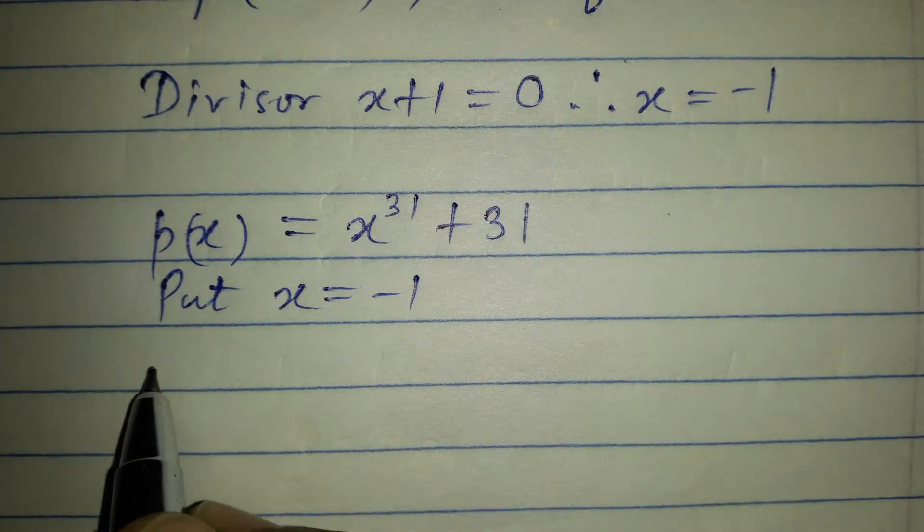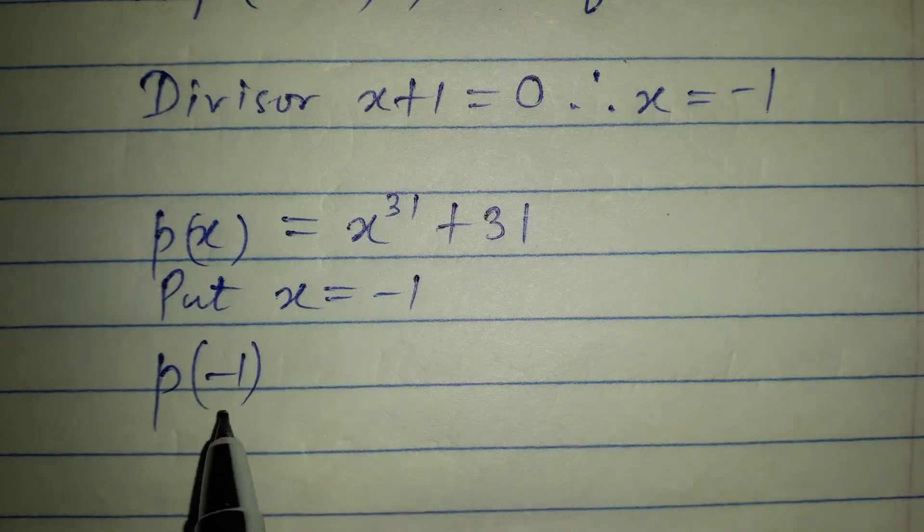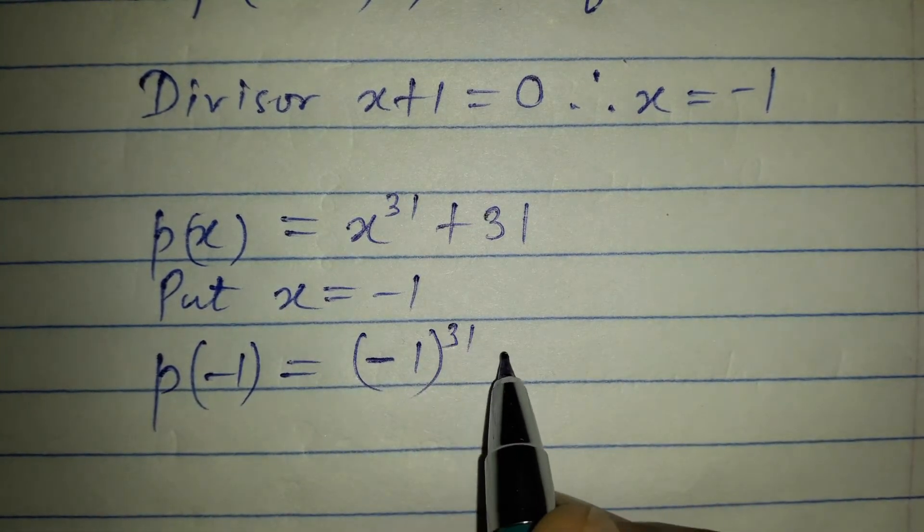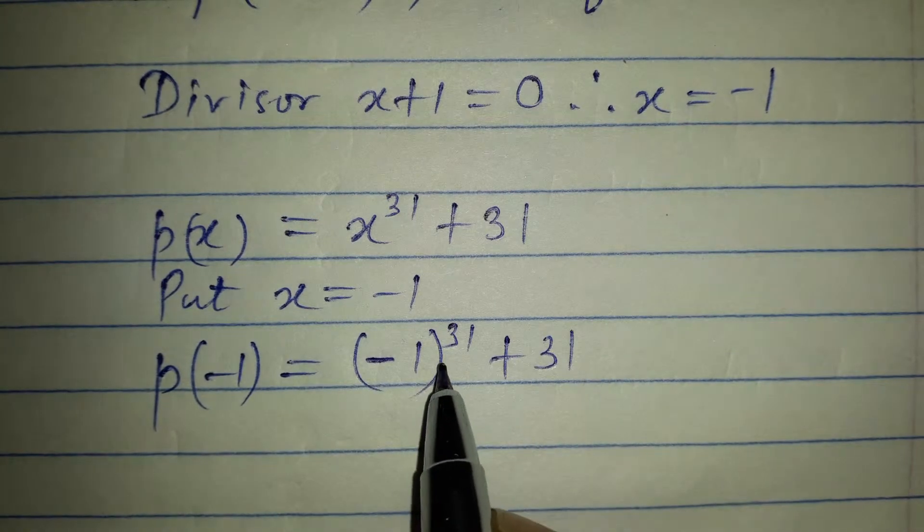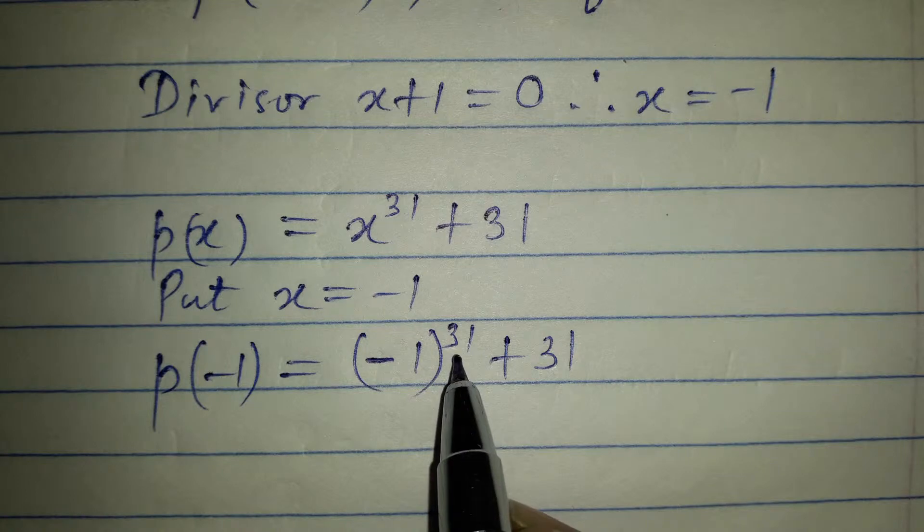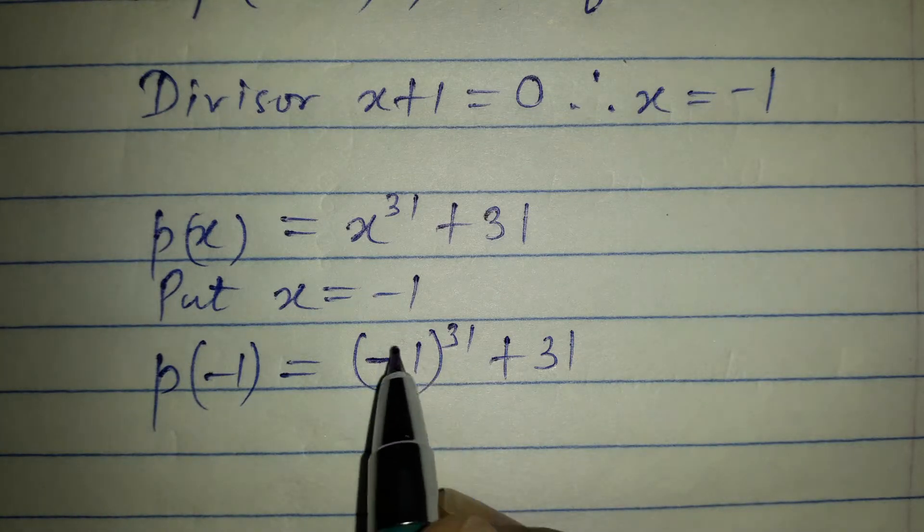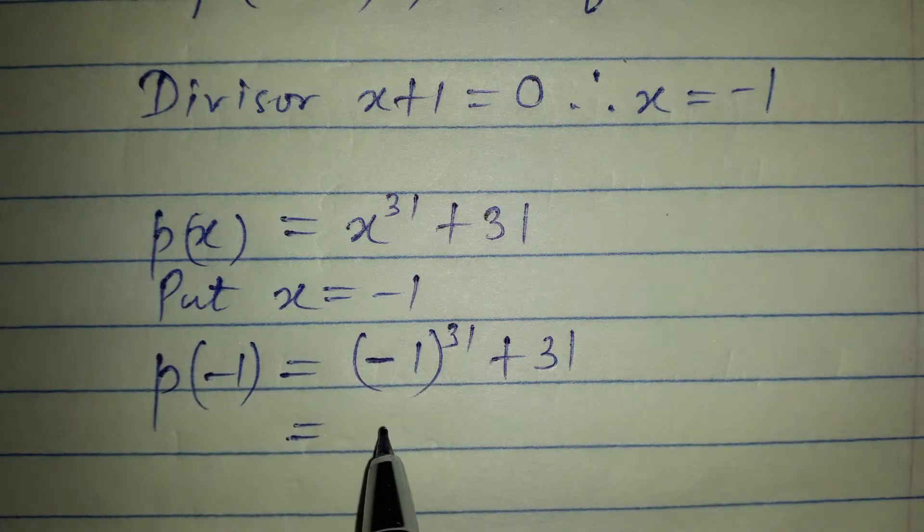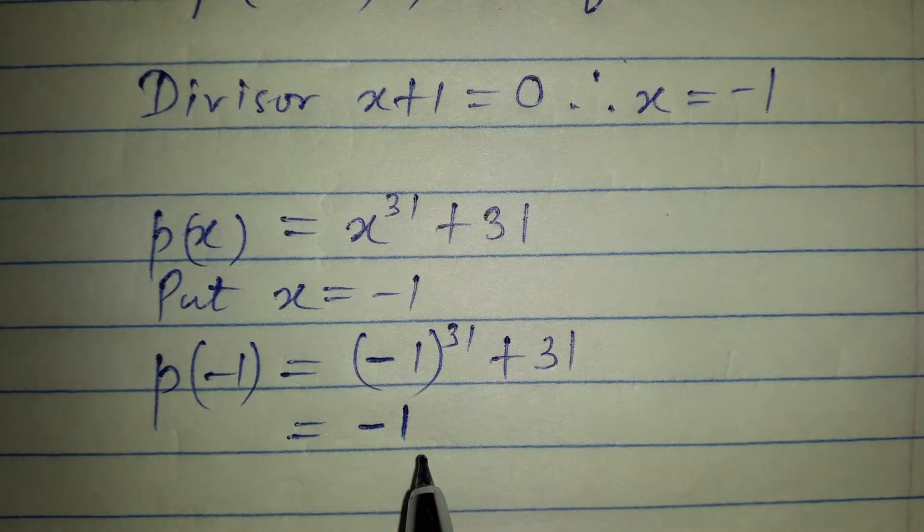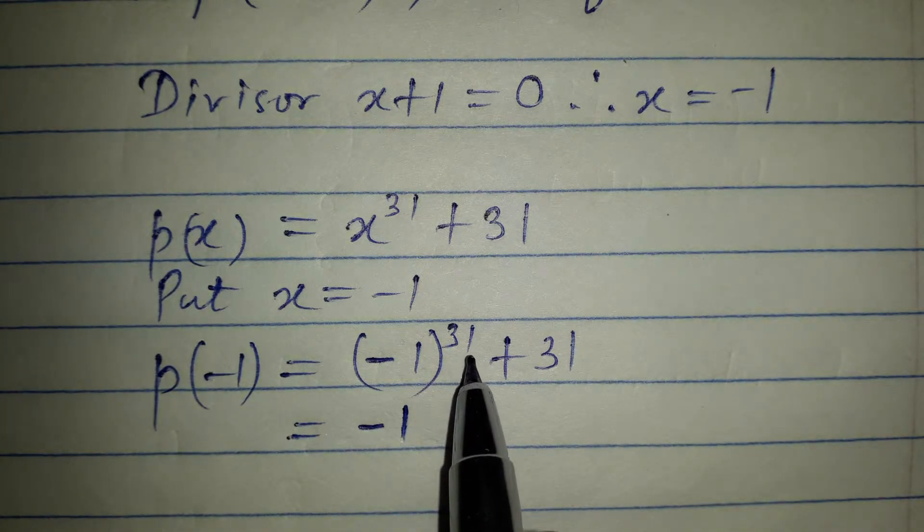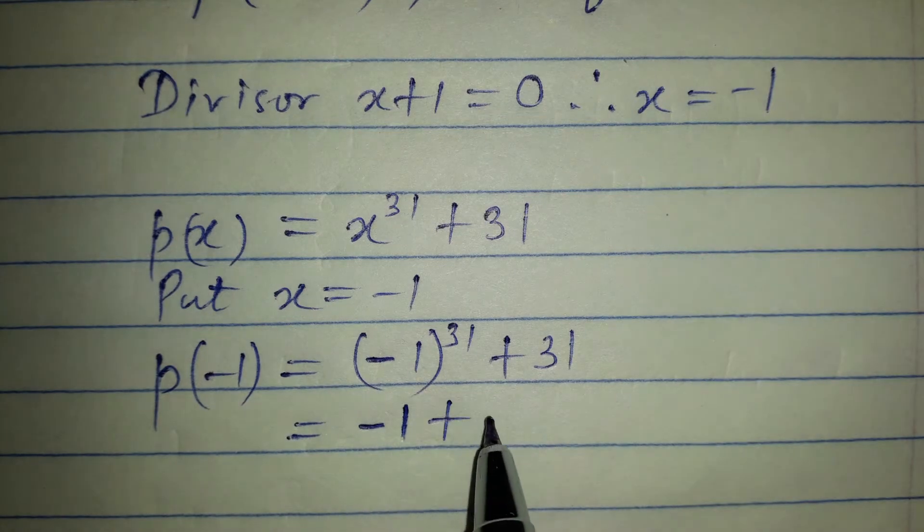We will have p of minus 1, that is equal to minus 1 raised to 31 plus 31. Minus 1 raised to 31, which is an odd number, so the resultant will remain negative, that is minus 1. Minus 1 plus 31 gives us 30.